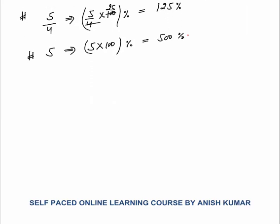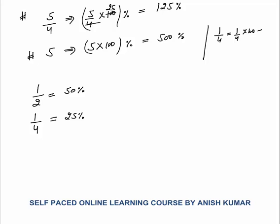For example, 1 by 2 is 50 percent. What about 1 by 4? One by 4 is half of 1 by 2, so half of 50 is 25 percent. You can also calculate directly: 1 by 4 into 100 equals 25 percent. So 1 by 4 is 25 percent.